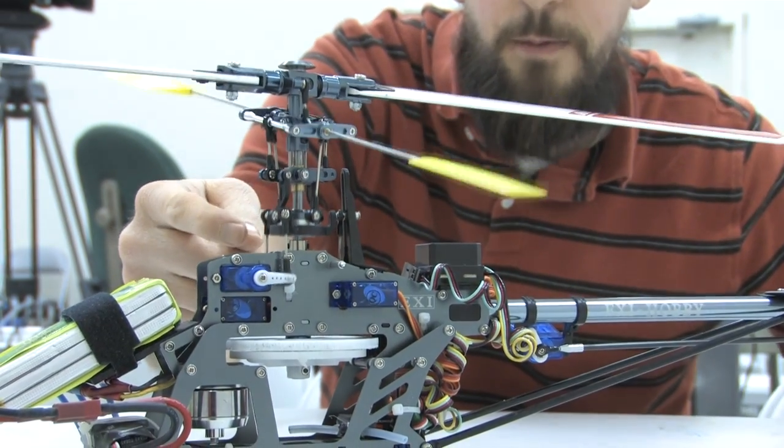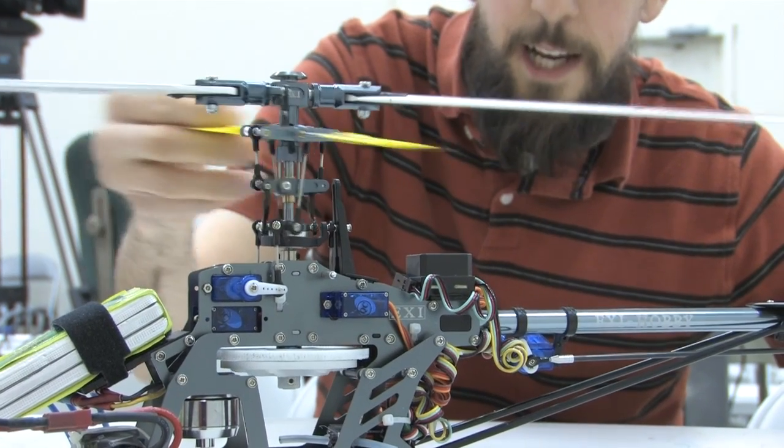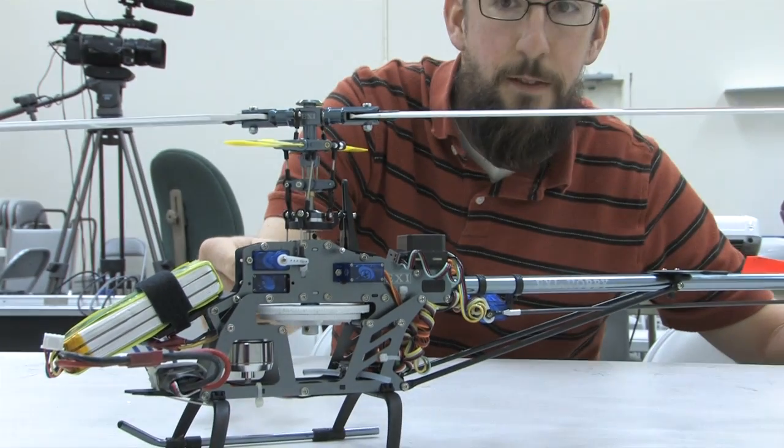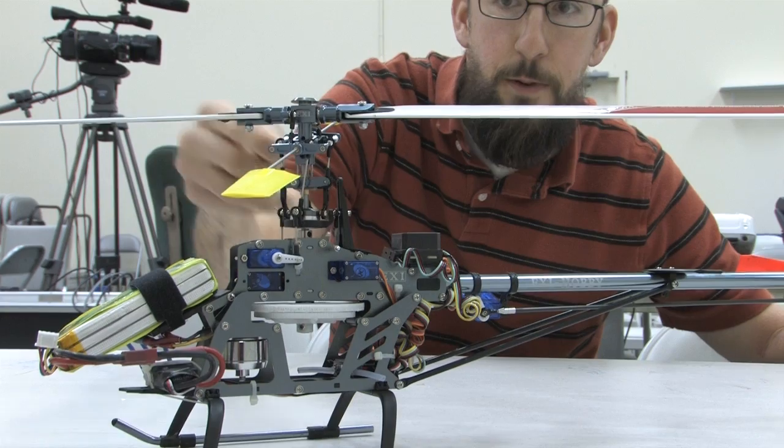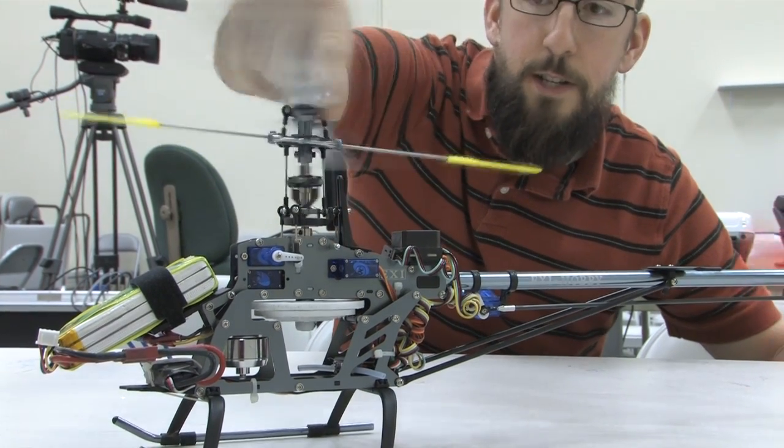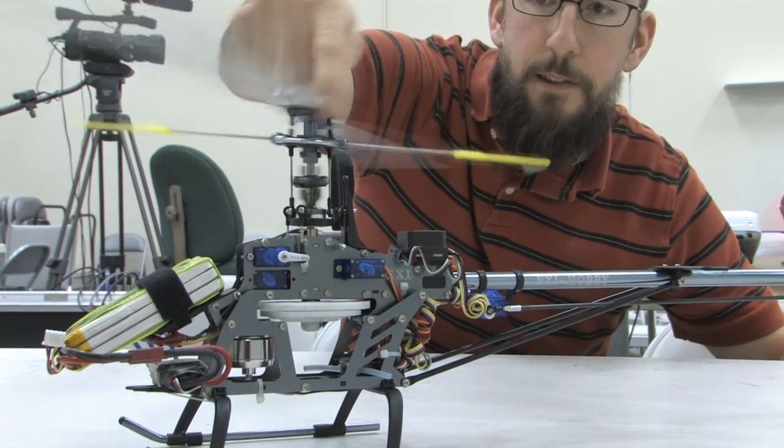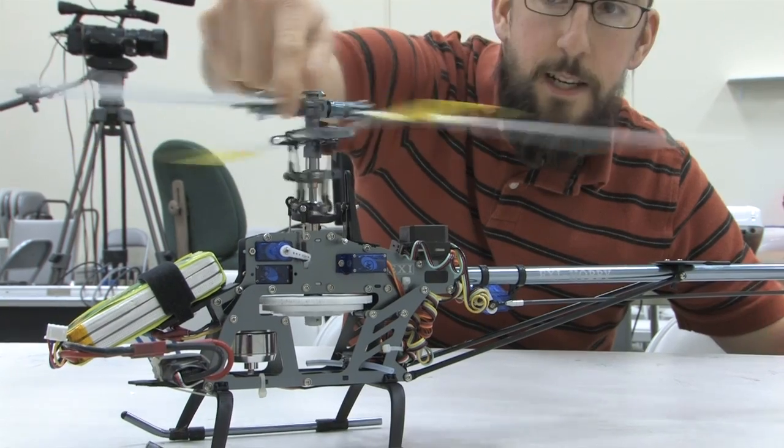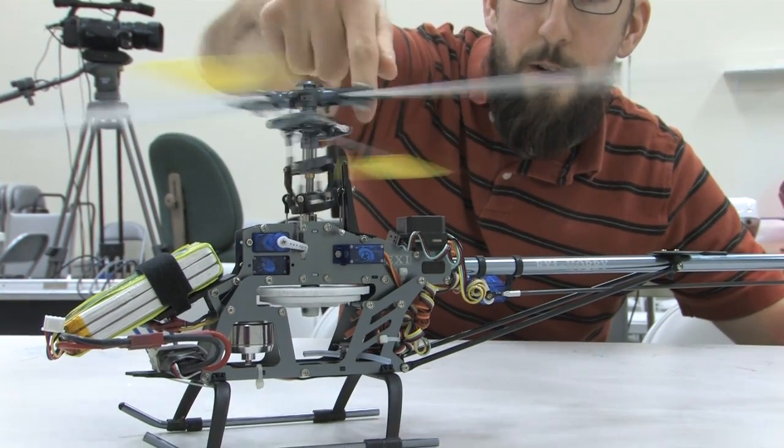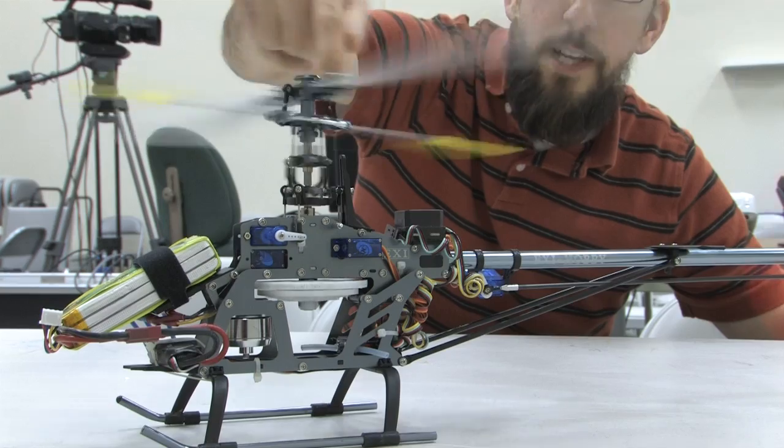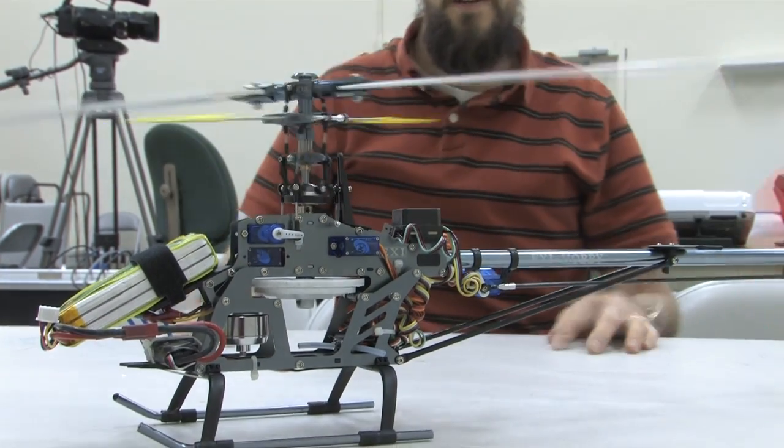This is called the swash plate. This thing is moving up and down. And what that does is that transfers the movement of these servos up to the rotor head while it's spinning, because the servos are stationary. The head spins. So what that swash plate does is it takes that movement from the servos and transfers it up into the head and adjusts the blades accordingly so that it flies where you want to.